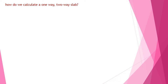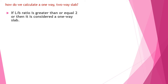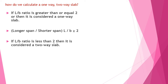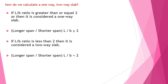How to calculate whether a slab is one-way or two-way? If the length divided by breadth ratio is greater than or equal to two, it is considered a one-way slab. If the longer span divided by shorter span — that is, length divided by breadth — is less than two, it is considered a two-way slab.